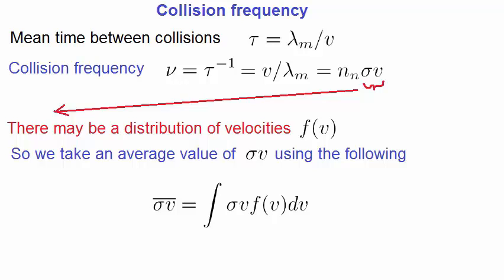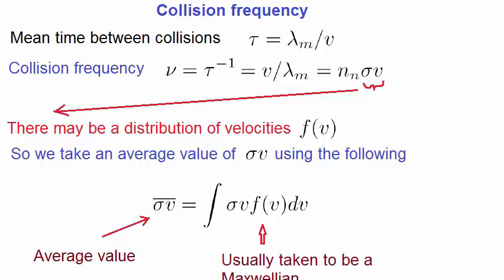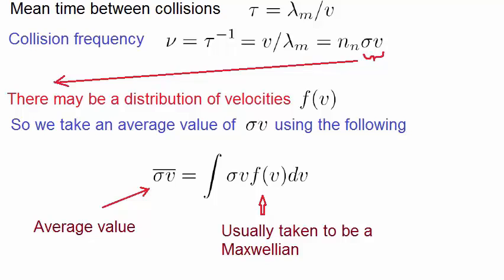So we need to take an average of sigma v. It's done by weighting sigma v with the distribution function f, and then integrating. At the moment, it's not clear why we do this, because we have not really delved into what the distribution function means. Its explanation will be given in the kinetic theory part of the course. At the moment, you can look at f to be the same as a probability function. On the left hand side, sigma v bar is the average value of sigma v, and if the plasma is highly collisional, f is taken to be a Maxwellian.